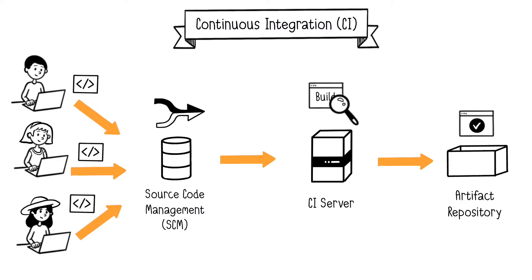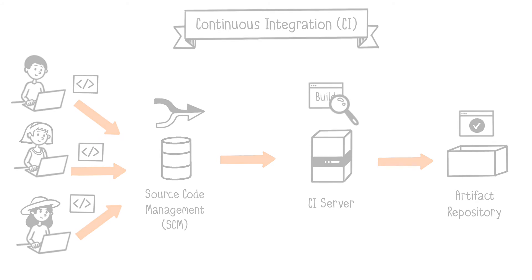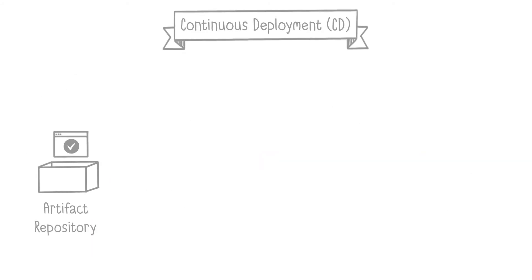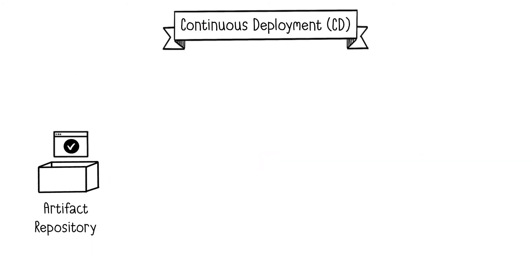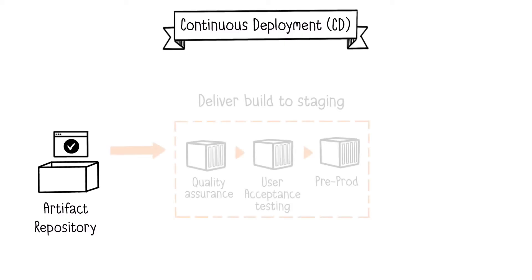In short, Continuous Integration helps ensure that software components work together. The next step is Continuous Deployment. The goal is to build software in such a way that it can be released to production at any time. At this stage, new automated tests are conducted with each application delivery on various environments, including production, if the tests pass successfully.